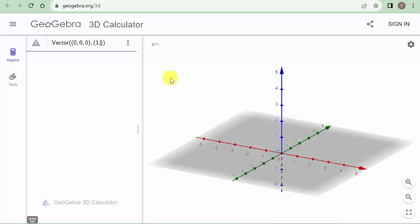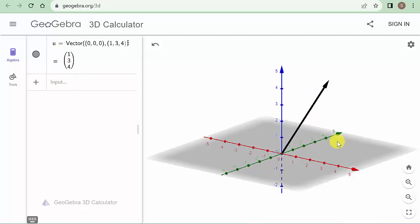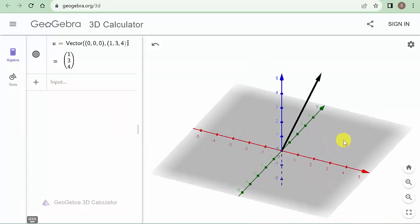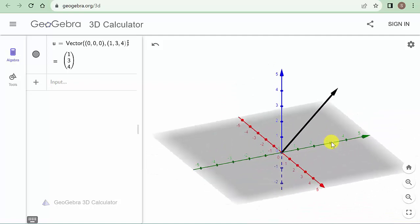And you can see it labels it vector u and there's the vector drawn in three dimensions. And you can move it around and see what it looks like.